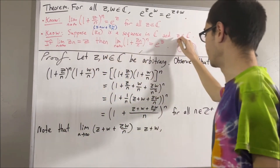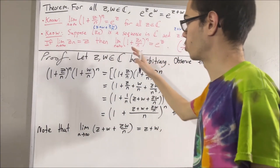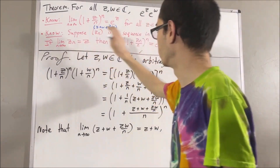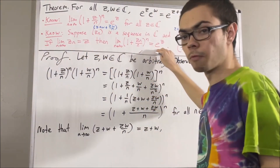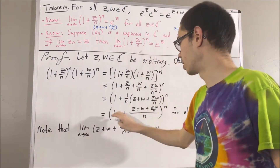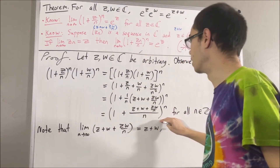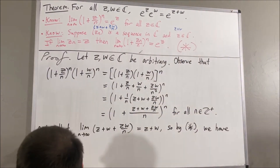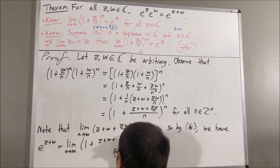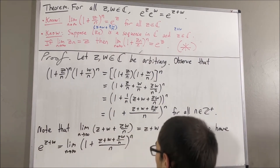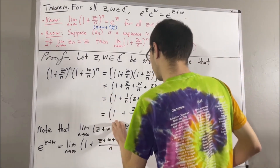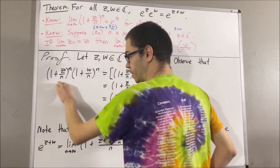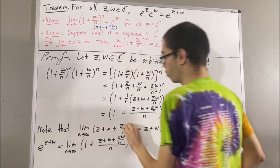And we take z to be z plus w. The reason why is because we know that this sequence converges to z plus w. So because this is true, we can conclude that the limit of this sequence is equal to e to the z plus w. But remember, these two values are equal for every positive integer n. Therefore, the sequence of these expressions is equivalent to the other sequence, so they must converge to the same value.